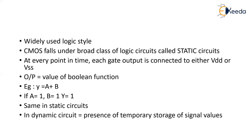In your dynamic circuit, there will be a presence of temporary storage of signal values. The output sometimes will not be 0 and will not be 1 — there will be an intermediate value occurring at the output, and that particular voltage will be stored in a capacitor on the load side. That is the difference between static circuitry and dynamic circuitry. As of now, we are not dealing with dynamic CMOS. In static CMOS, the output will either stay at 1 or 0, the same as your boolean expression's output.